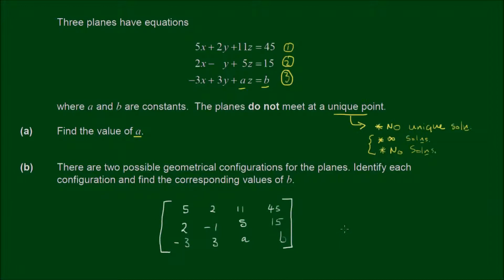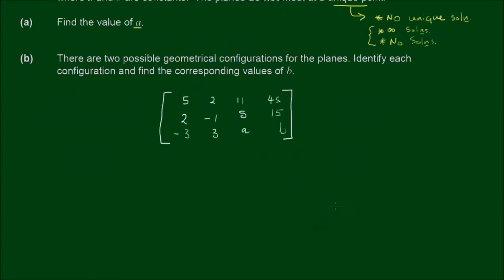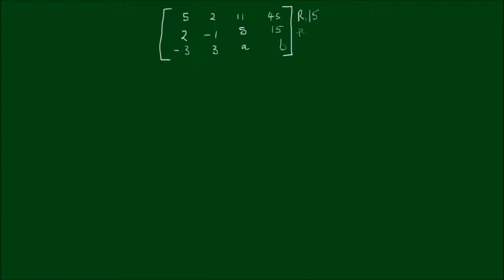So what I want to do now is to begin to solve for these set of equations by doing some row operations to get this matrix in what we call the row echelon form. You might be able to do this more efficiently, but I'm just going to divide each of these rows by their first coefficient. So I'll have row 1 divided by 5, row 2 divided by 2, and row 3 divided by negative 3. And that gives me 1, 2 fifths, 11 fifths, and 9. For the second row, we'll have 1, negative 1 half, 5 on 2, and 15 on 2. For the third row, we have 1, negative 1, negative A on 3, and negative B on 3.